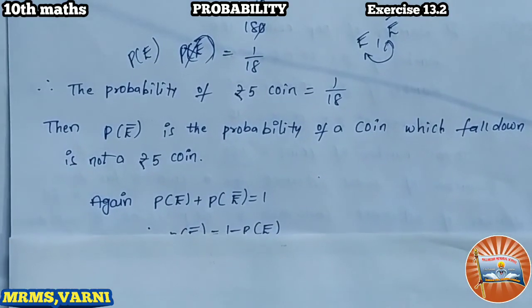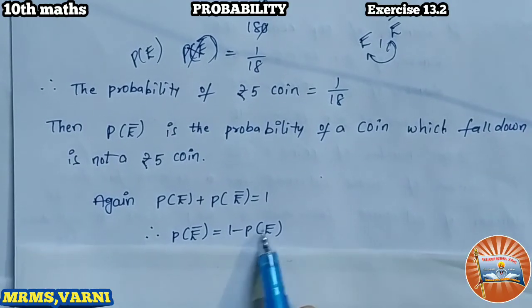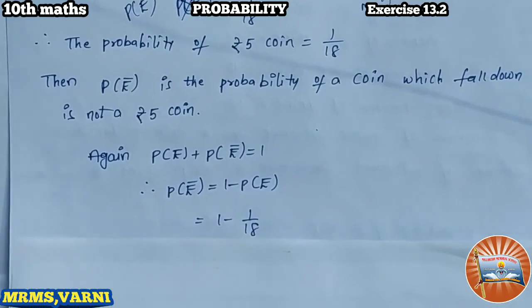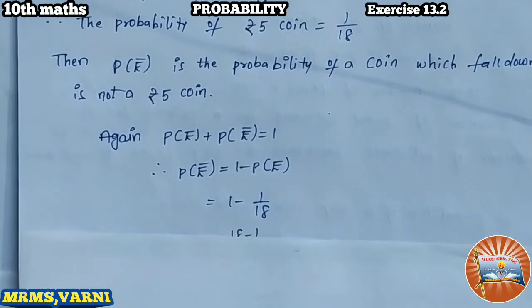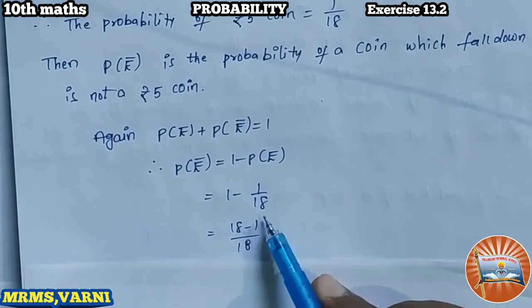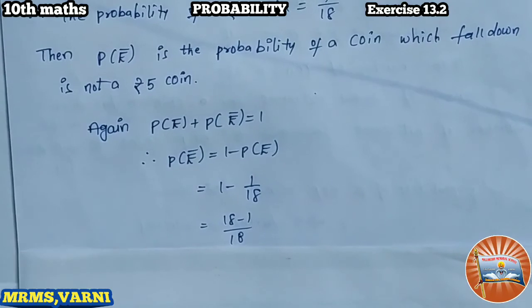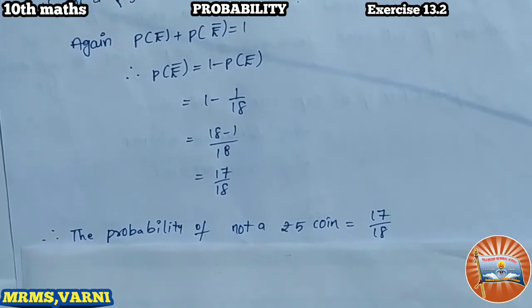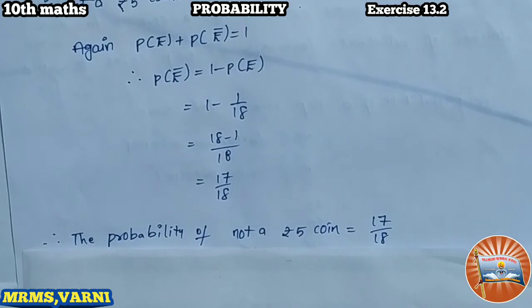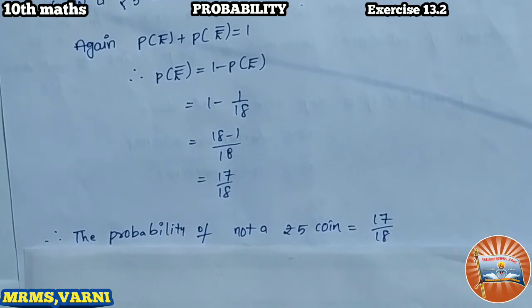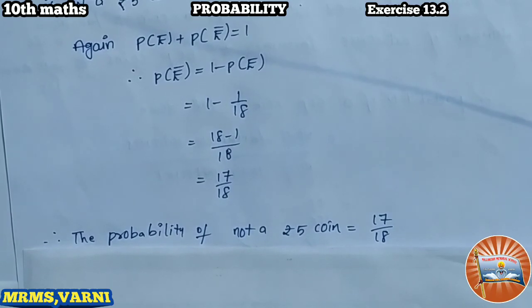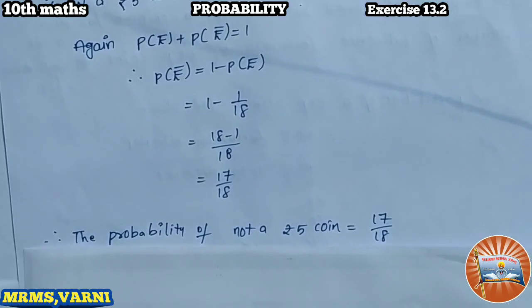Transposing P(E) to the right-hand side, we get P(E bar) = 1 minus P(E). Substituting P(E) = 1 by 18, we get 1 minus 1 by 18, which gives us 18 minus 1 by 18, that is 17 by 18. So the probability of not getting a five-rupee coin is 17 by 18. In the first part we found the probability of a 50 paisa coin is 5 by 9, and in the second part it is 17 by 18. I hope you understand. Thank you.